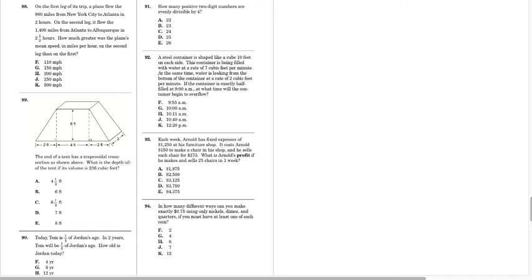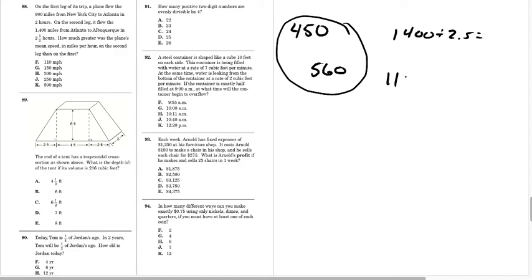Number 88. On the first leg of the trip, we went 900 miles in two hours, which is 450 miles per hour. And then we did 1,400 divided by 2.5, which is going to equal 560. Find the difference between these two is 110, which is F.